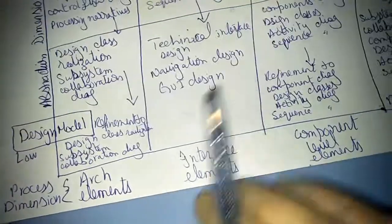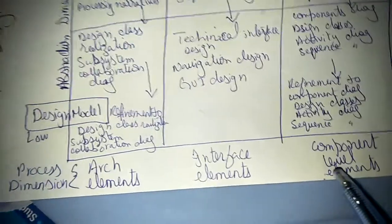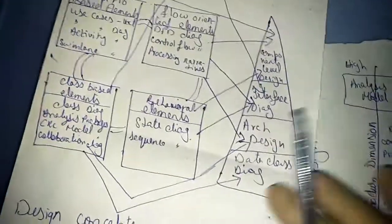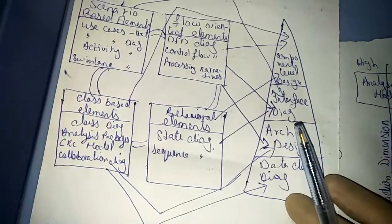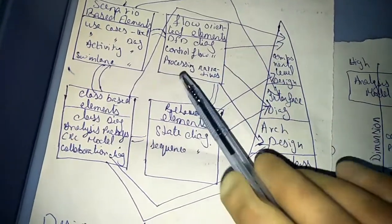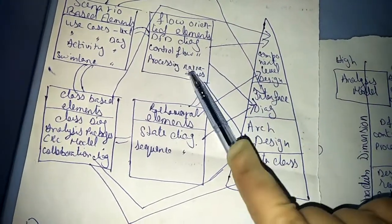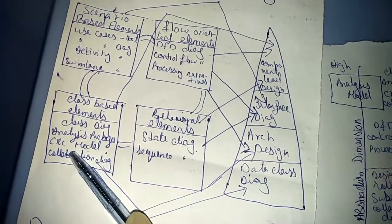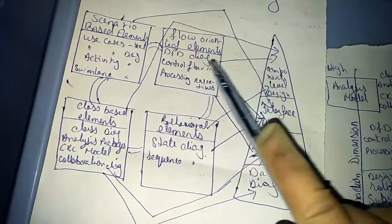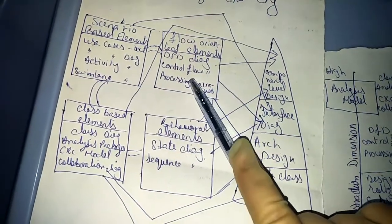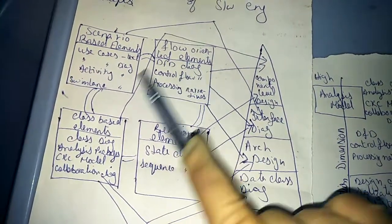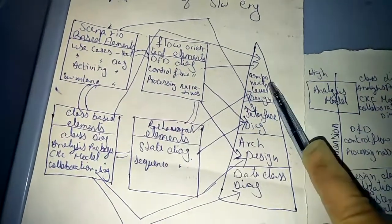This covers all the elements. The next is component level elements. Component level elements include flow-oriented input, class-based elements, flow-oriented elements, class-based, and behavioral elements.